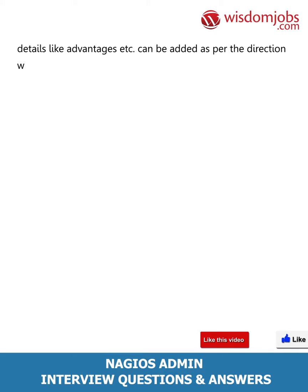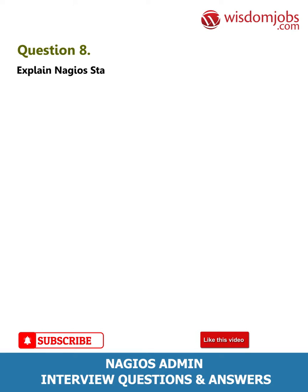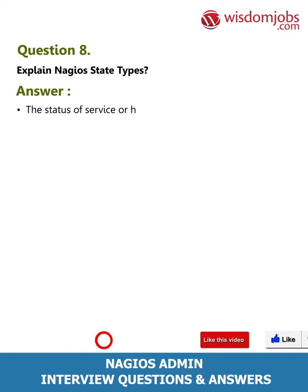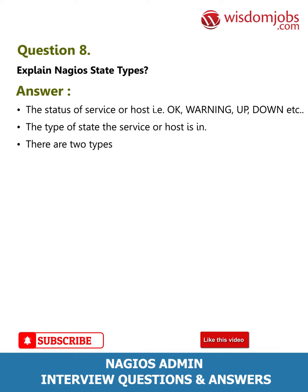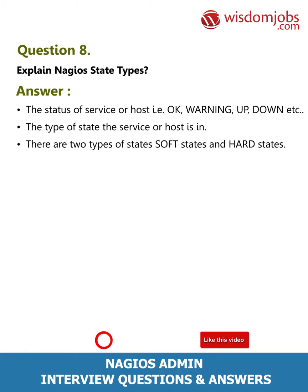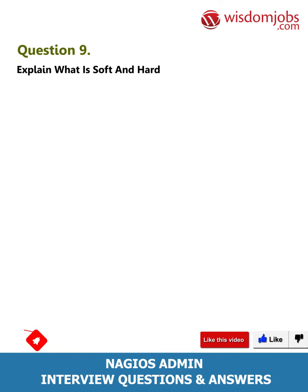Question 8: Explain Nagios state types. Answer: The status of a service or host — OK, warning, up, down, etc. — represents the current state. There are two types of states: soft states and hard states.